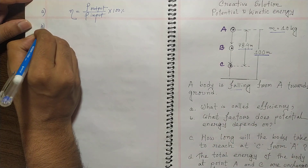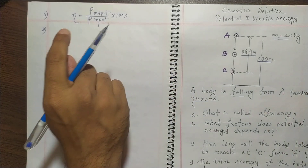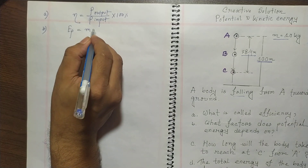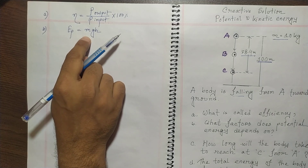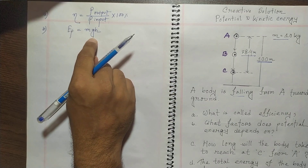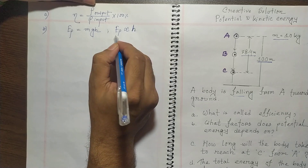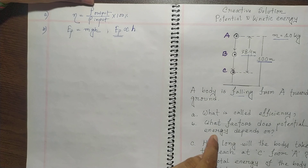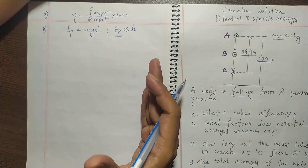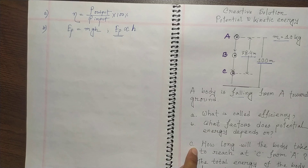The B question is: what factors does potential energy depend on? From the definition, potential energy is the measure of the deviation of position or state of a body from its normal value. We know that PE equals MGH. The mass M is a fixed constant, and G at any position is also constant, so potential energy actually depends on the height H. The greater the height, the greater the potential energy.